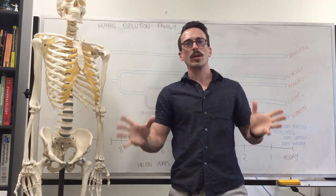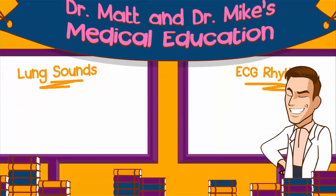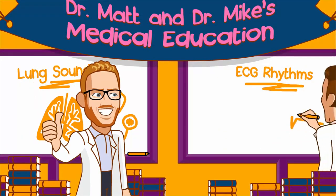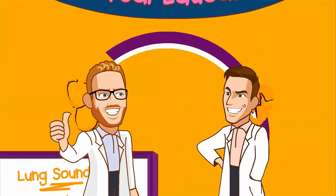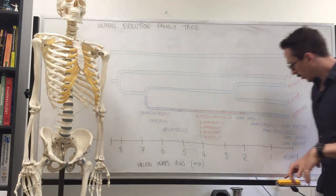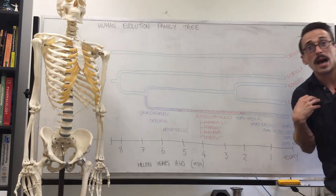Hi everyone, Dr. Mike here. Let's take a quick look at our evolutionary family tree. If we were to take a look today, we know that we have orangutans, gorillas, bonobos, chimpanzees, and humans, us.